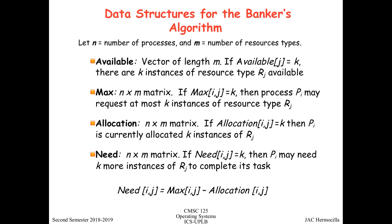In order to make this work, we need to define additional data structures. We let n be the number of processes and m be the number of resource types. We define a vector called 'available' of length m, where if available[j] equals k, that means there are k instances of resource type Rj that are available.